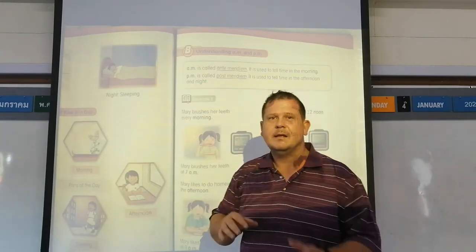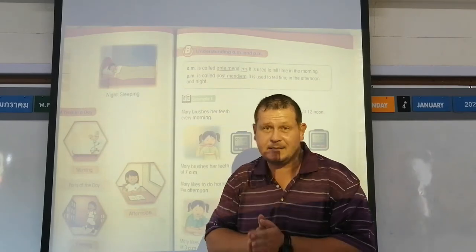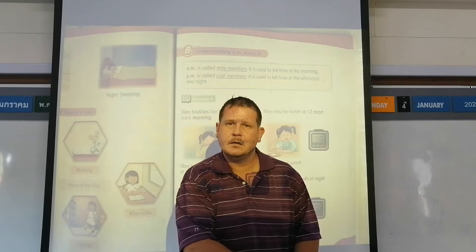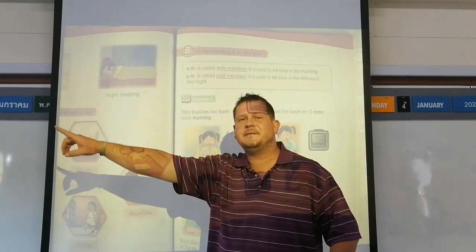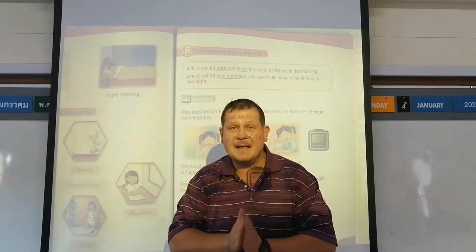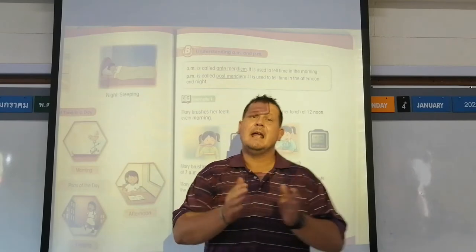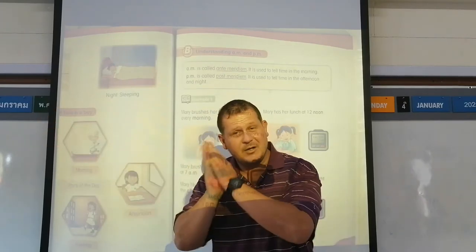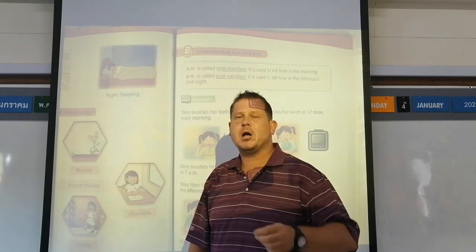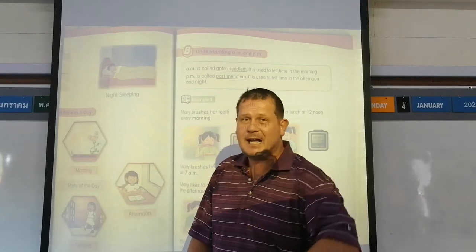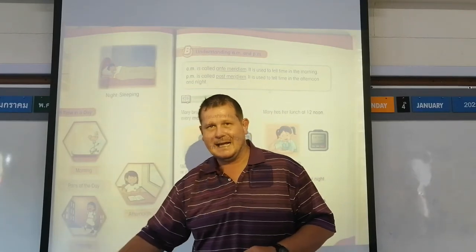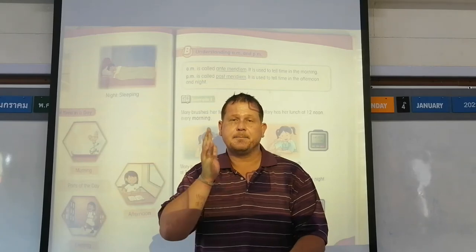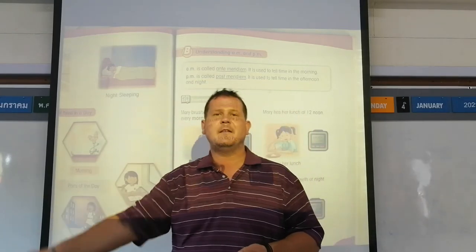Ante Meridiem, or AM, can also be called After Midnight. That means from 12:01 in the morning until 11:59 in the afternoon — that counts as AM. Everything from 12 o'clock in the afternoon right through until 11:59 at night is called PM — it means Past Midday. So: AM is After Midnight, PM is Past Midday. Everything in the morning up until just before 12 o'clock is AM, and everything from 12 in the afternoon until 12 at night is PM.